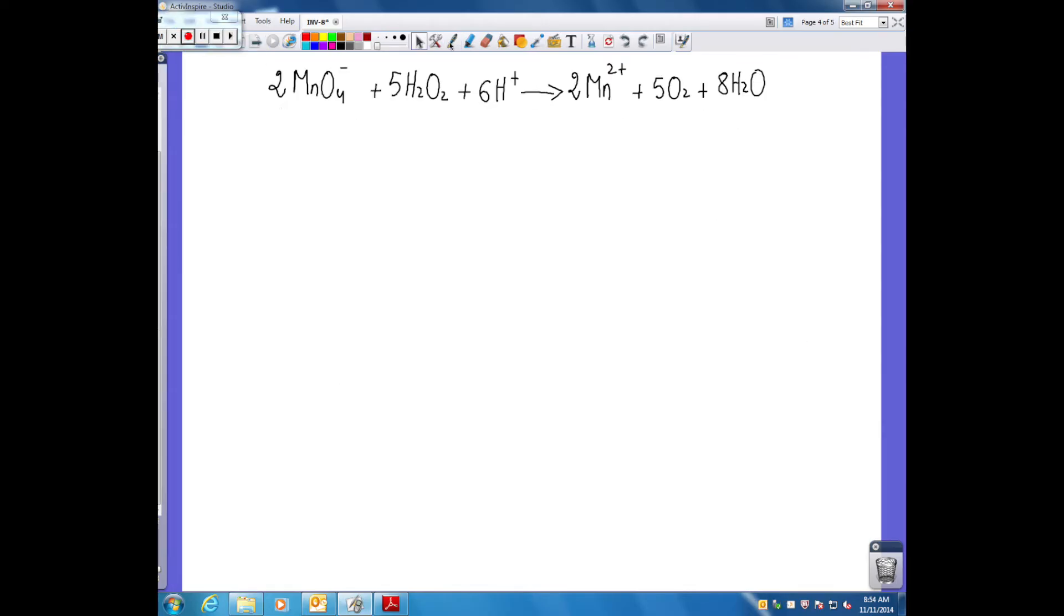Now that we have balanced the reaction, we need to look at the molar ratio between the permanganate and the hydrogen peroxide, and it's found to be 2 to 5.